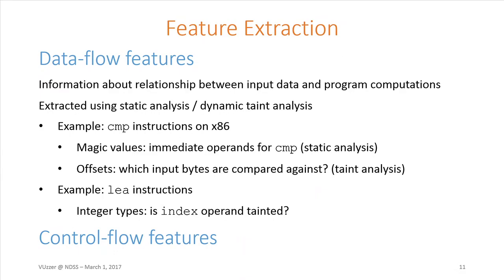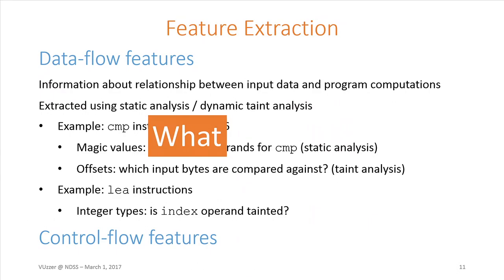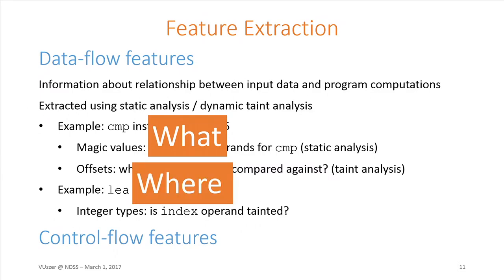Another example we implemented is analysis for LEA instructions — load effective address. With this, we can figure out limited type information in the input. We do this by looking at the index operand for the LEA instructions, and if this is tainted, then we know that at that location in the input, an integer value has to be present. This basically answers the question of what we need to change into, and where we need to make those changes in the input.